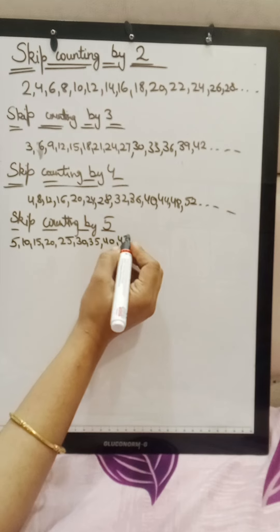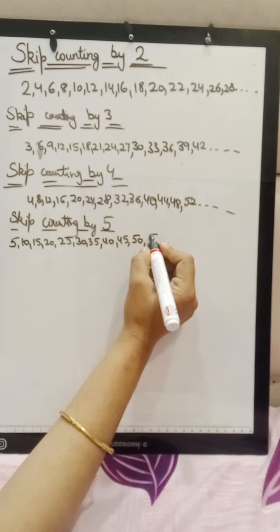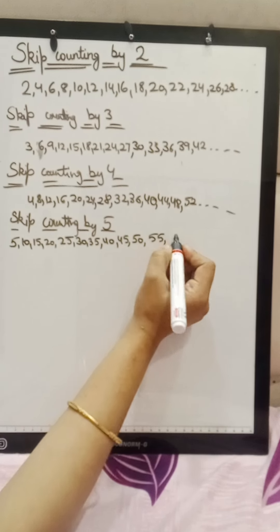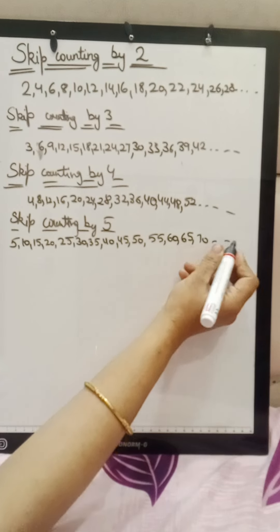35, 40, 45, 50, 55, 60, 65, 70 and so on.